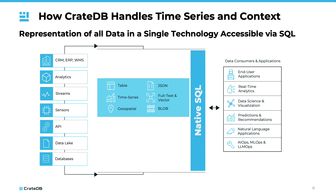This is exactly how CrateDB can help. Beyond its capability of storing tabular and time series data, CrateDB provides several additional features — including support for JSON, full-text search, vector storage and similarity search, as well as geospatial data handling. It can also store binary data. All of these data types can be combined in a single database record if needed and be easily accessed via standard SQL, making CrateDB a robust and versatile solution for time series data management.